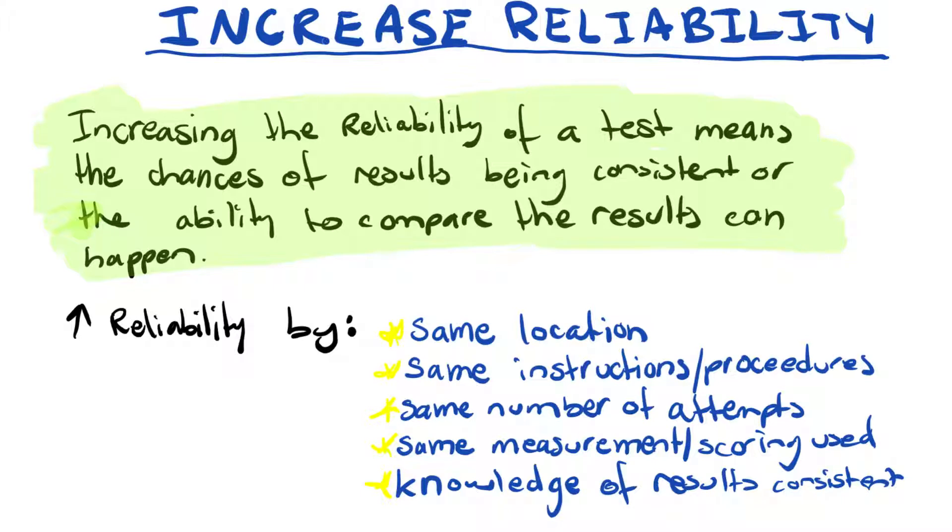We can increase reliability by ensuring that the location of the performance is the same, the same instructions and procedures are given to each athlete or performer, and the number of attempts is the same, and the same measurement or scoring system is used for the whole competition or the whole game, and that the knowledge of the results is consistent across all athletes and participants.